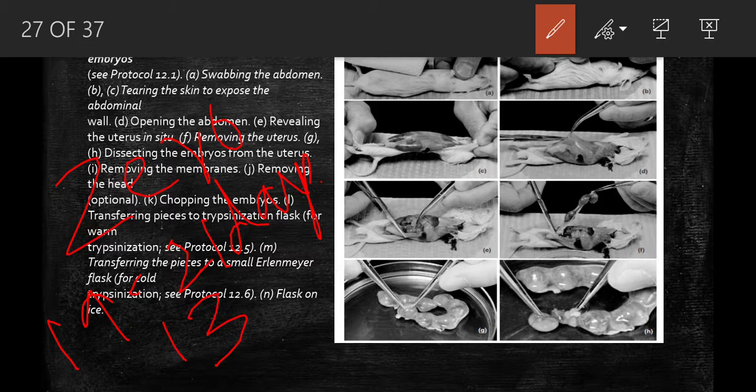The optimal age for preparing a culture is 13 days for large cultures, because at this stage it has lots of undifferentiated mesenchymal cells.